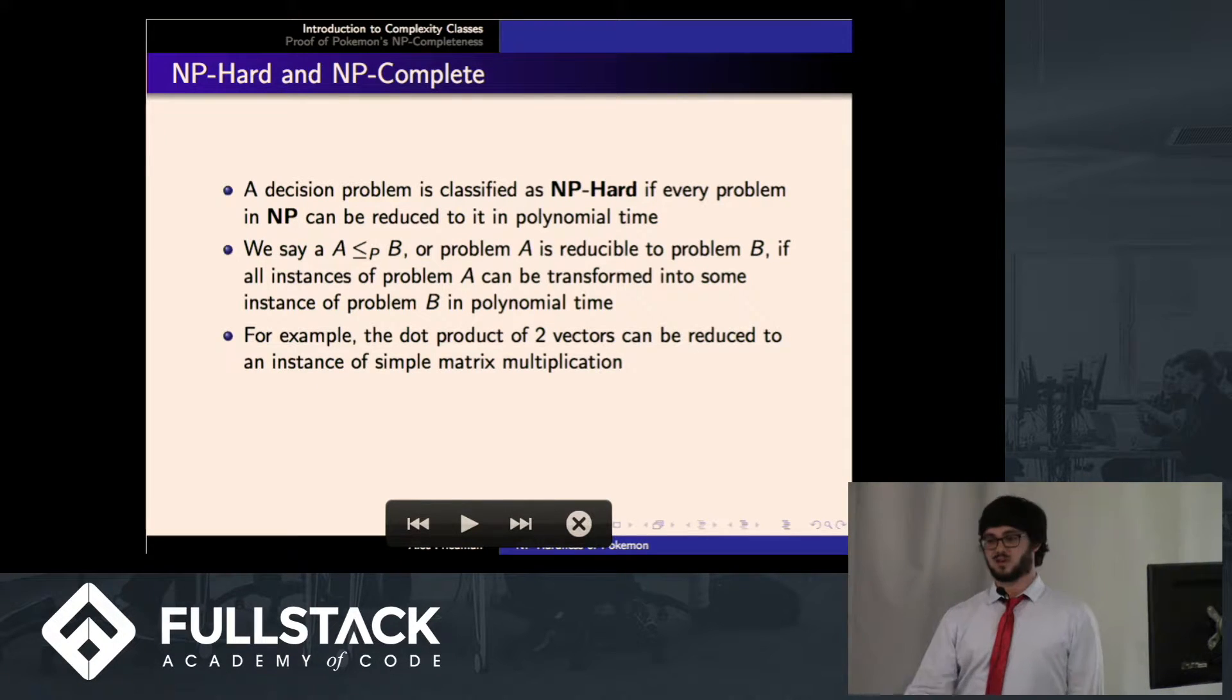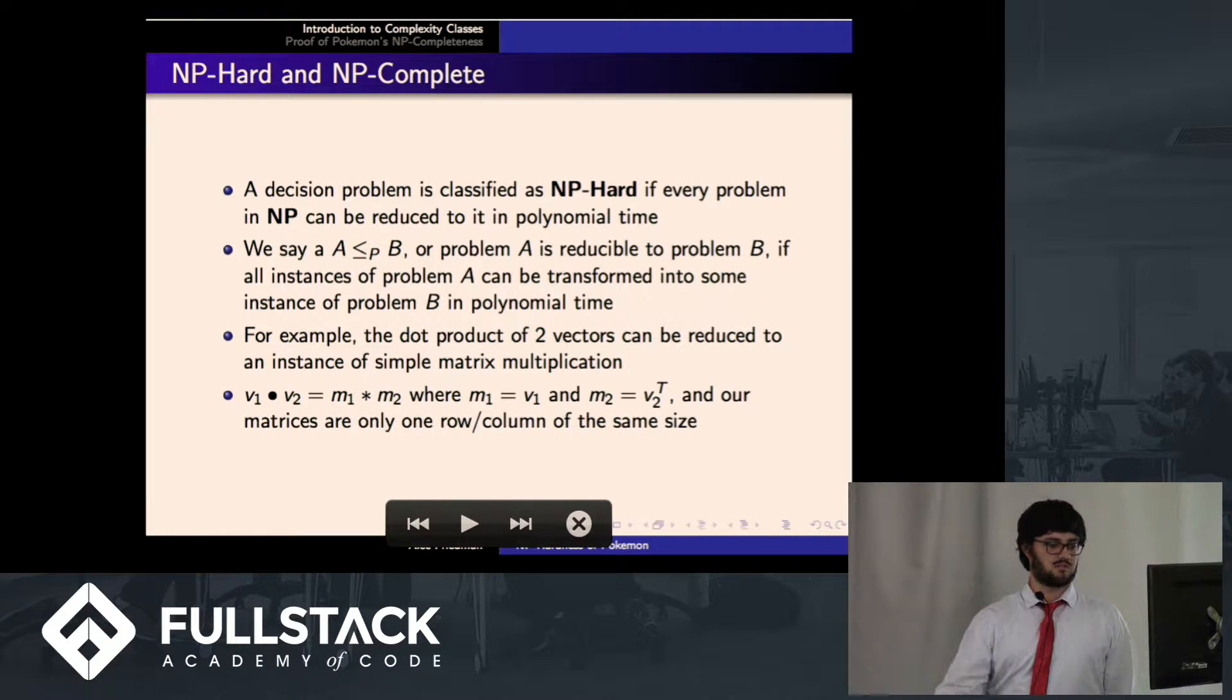So for example, in case that was very abstract and weird, the dot product of two vectors is basically an instance of simple matrix multiplication. So if you had some way of solving matrix multiplication, you could use that to solve the dot product of two vectors. V1 dot V2 is M1 times M2, where M1 is V1 and M2 is V2 transposed, turned on its side, and they're the same length.